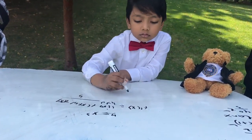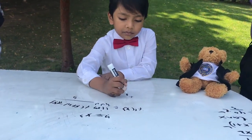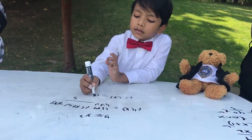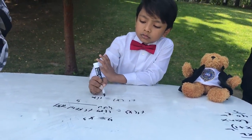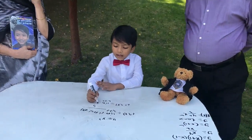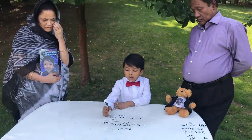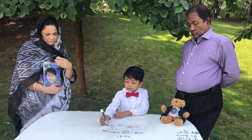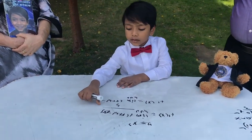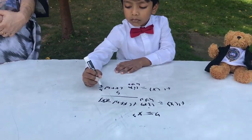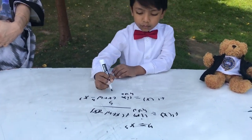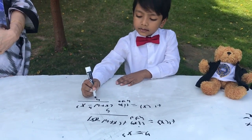f prime of x equals the limit as h goes to 0 of x plus h, the whole cube, minus x cubed, over h.